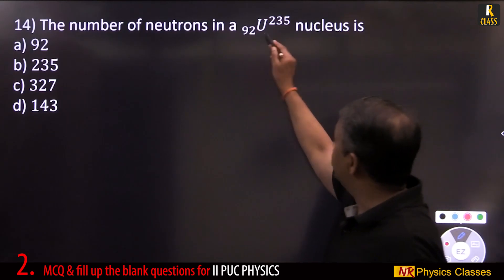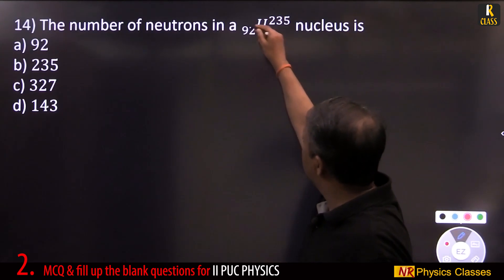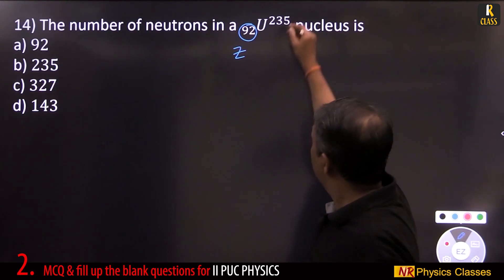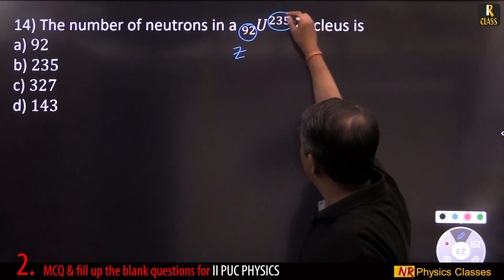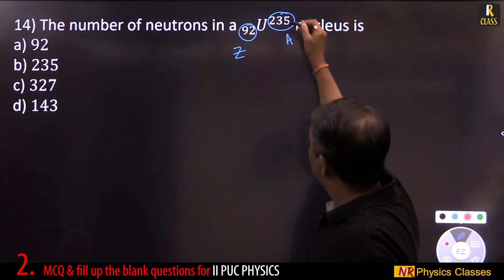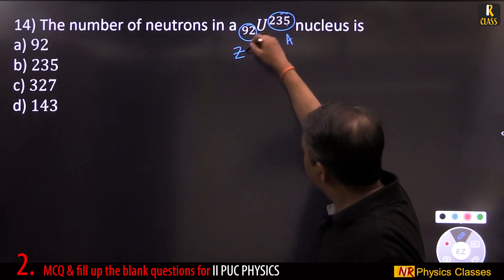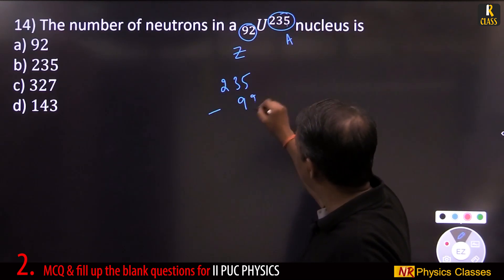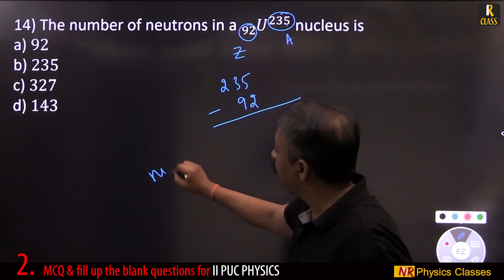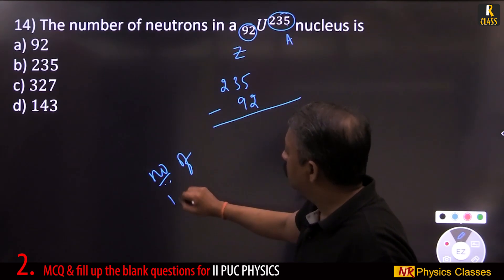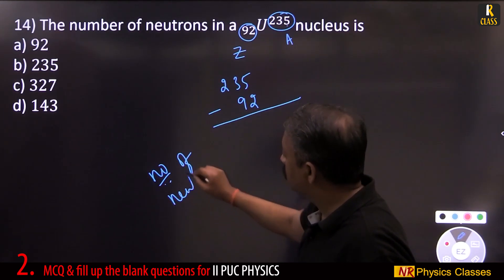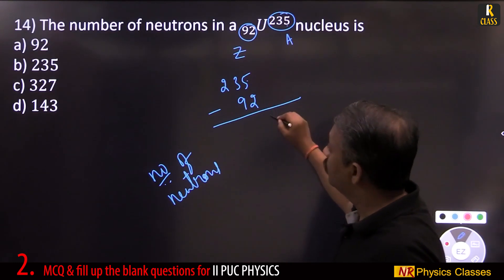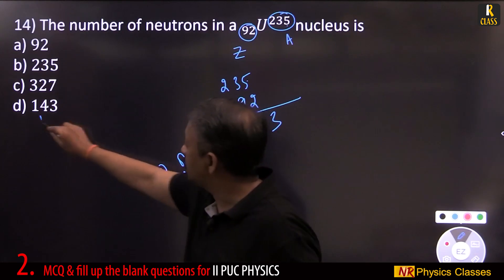The number of neutrons in a nucleus: atomic number Z gives the number of protons, mass number A gives total nucleons. For uranium-235 with Z=92: number of neutrons = 235 − 92 = 143.